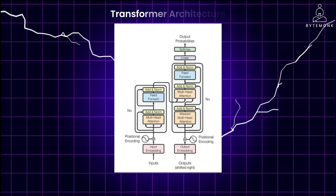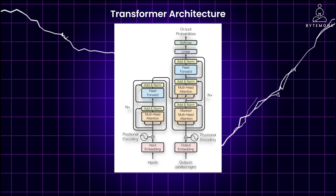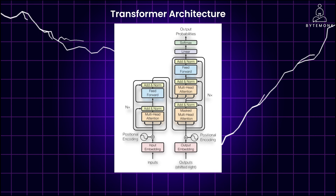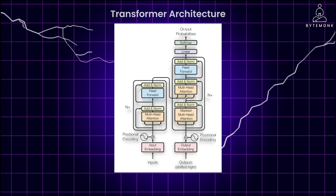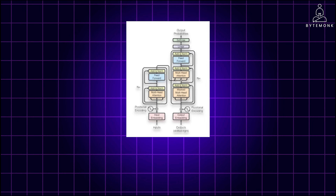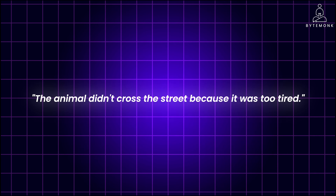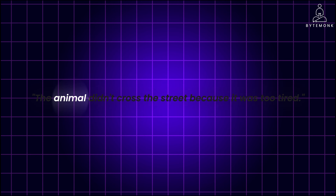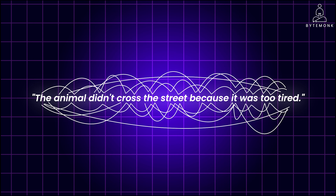The power of transformer architecture lies in its ability to understand and learn the relevance and context of all words in the sentence. Consider this sentence: 'The animal didn't cross the street because it was too tired.' Unlike traditional models that focus only on neighboring words, the transformer understands the relationships between every word in a sentence.